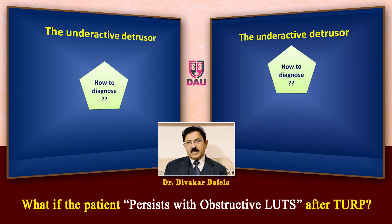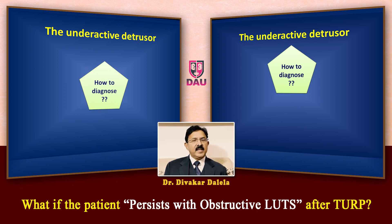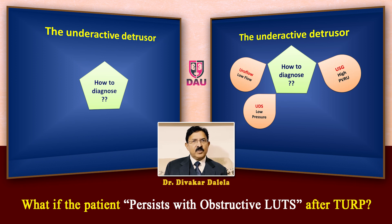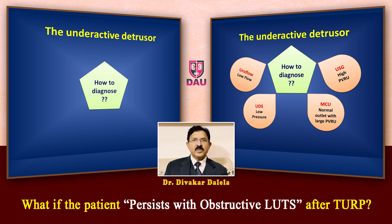Suppose you did not suspect bladder underactivity, or someone else operated the patient, and the patient comes to you for a second opinion because he did not void well after TURP — how do you diagnose this problem? For diagnosis, you need a uroflow test, which will show a low flow state; an ultrasound, which will show a high post-void residual volume; a urodynamic study, which will show low-pressure voiding; and also a voiding cystourethrogram or MCU, which will show a normal outlet — since a good resection was done — but still a large post-void residual in the bladder.